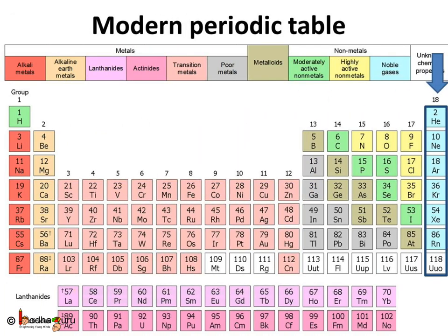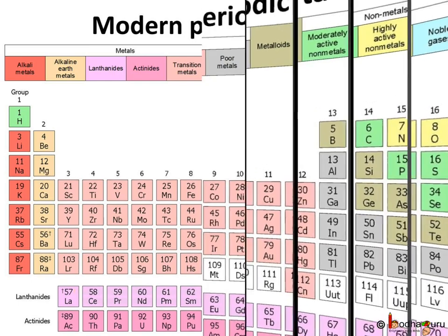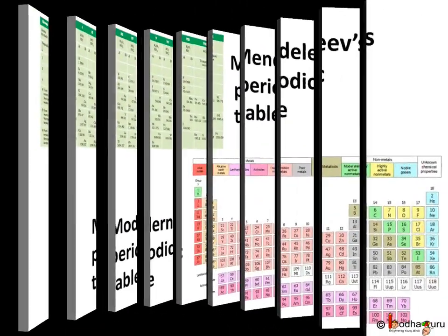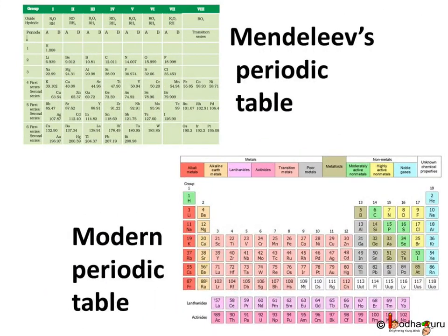In Mendeleev's periodic table, noble gases were not placed as they were not discovered at that time. Whereas in the modern periodic table, the noble gases are present in a separate group named Group 18.